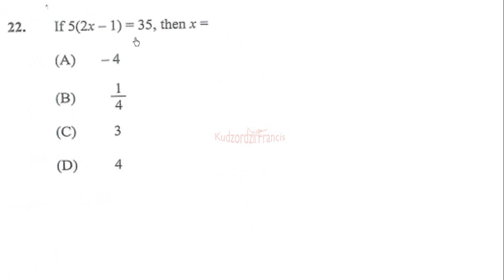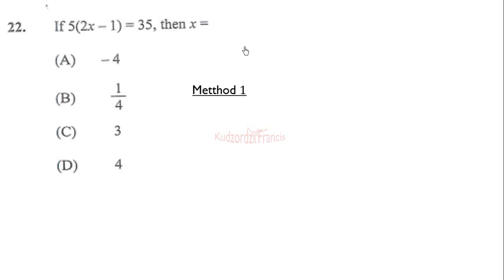Question 22: if 5 times (2x minus 1) is equal to 35, then x is equal to what value? We can use two different methods. For the first method, we divide both sides by 5.